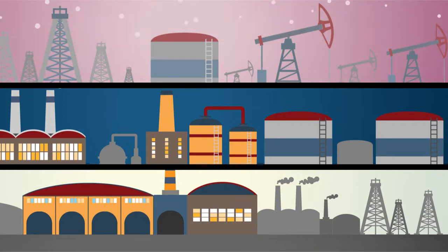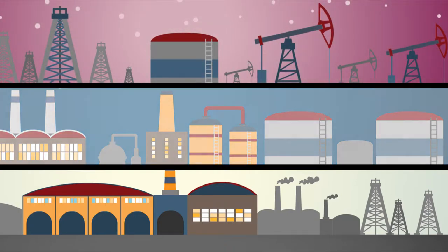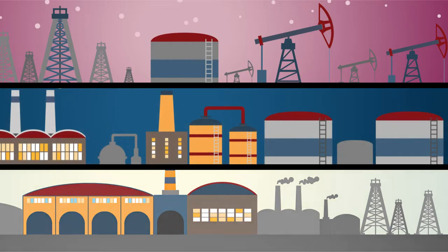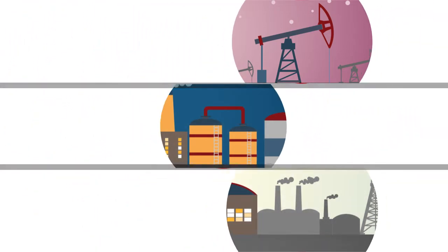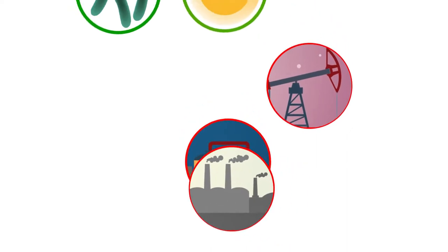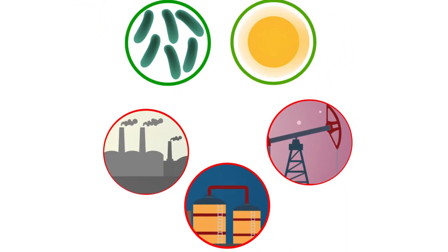Humans are increasingly looking to find alternatives to fossil fuels as sources of energy and feedstocks for chemical production. To that end, some scientists have created artificial photosynthetic systems to generate renewable energy and simple organic chemicals using sunlight.